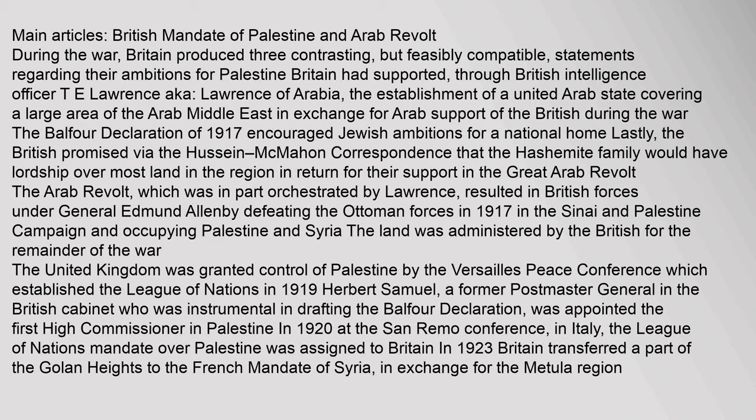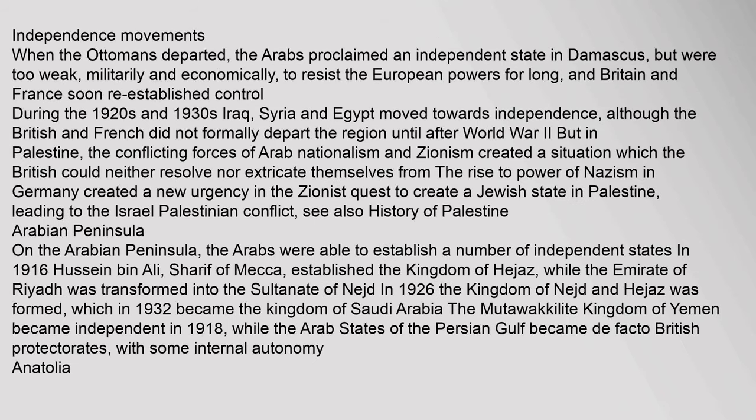The United Kingdom was granted control of Palestine by the Versailles Peace Conference, which established the League of Nations in 1919. Herbert Samuel, a former postmaster general in the British cabinet who was instrumental in drafting the Balfour Declaration, was appointed the first High Commissioner in Palestine in 1920 at the San Remo Conference in Italy. The League of Nations mandate over Palestine was assigned to Britain. In 1923, Britain transferred a part of the Golan Heights to the French Mandate of Syria in exchange for the Metullah region.